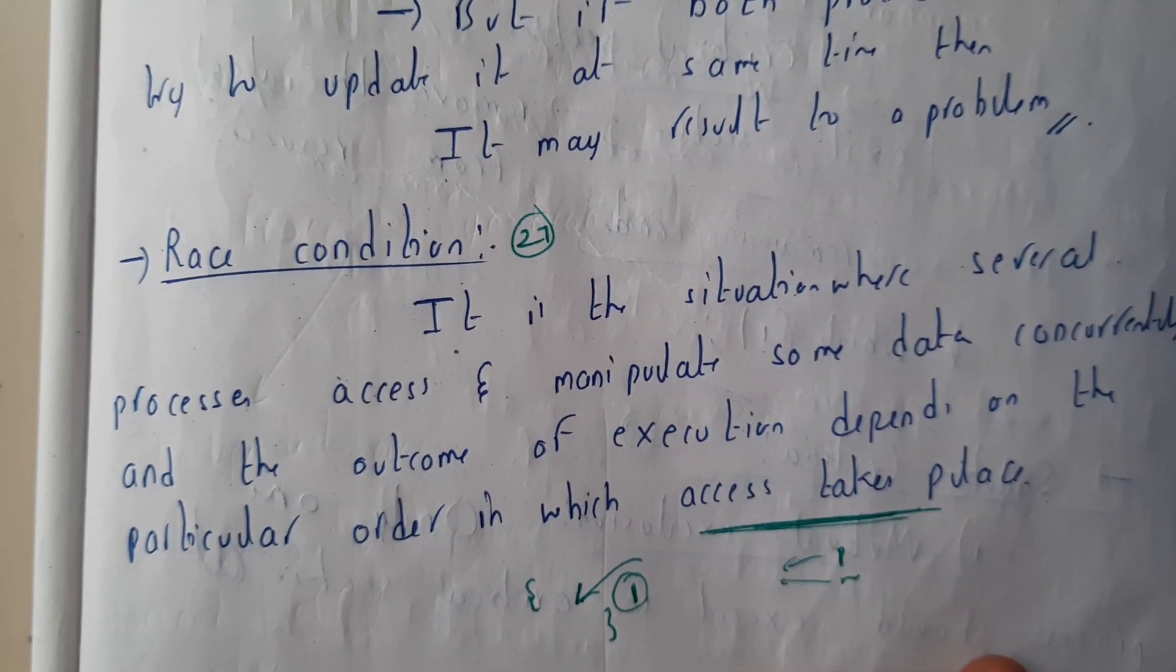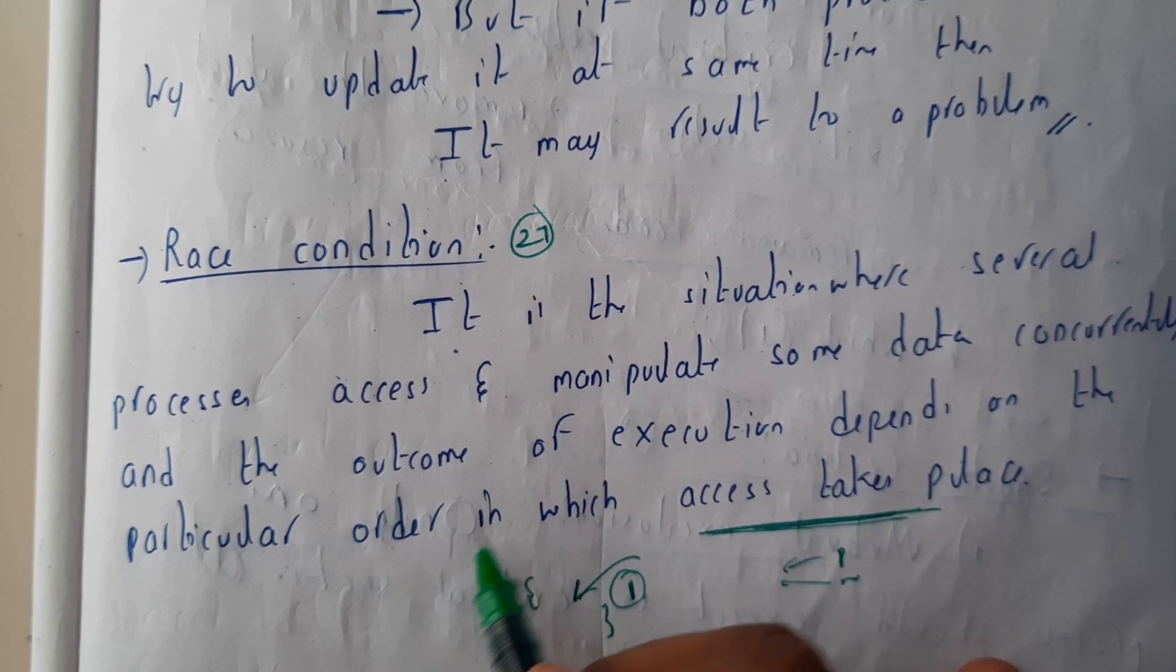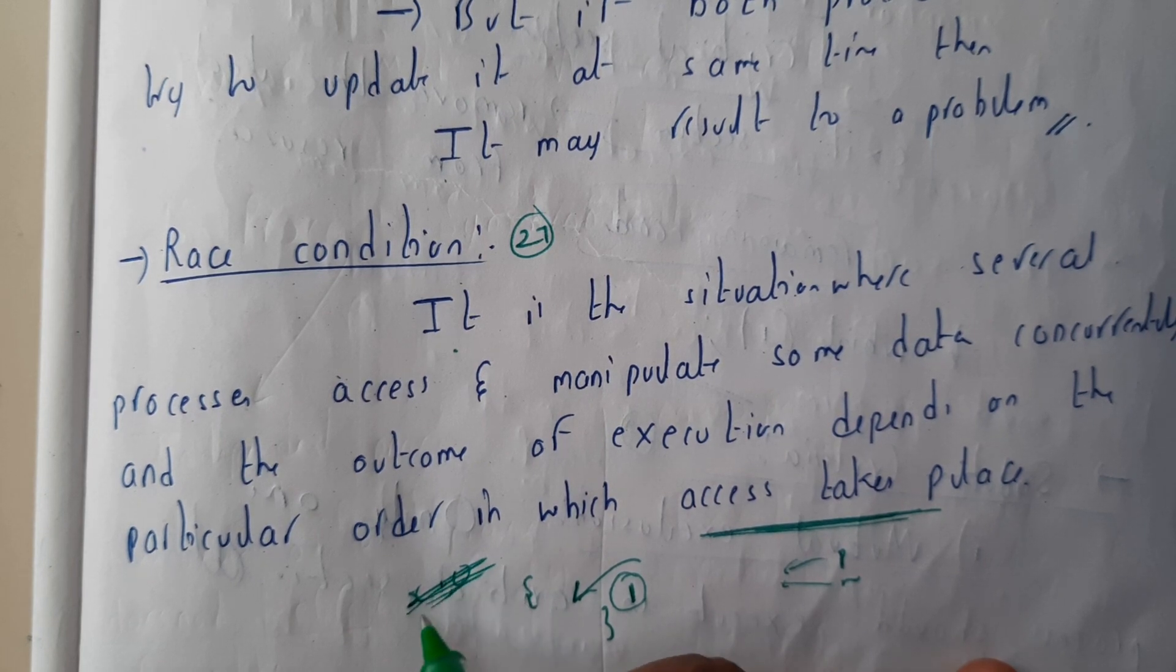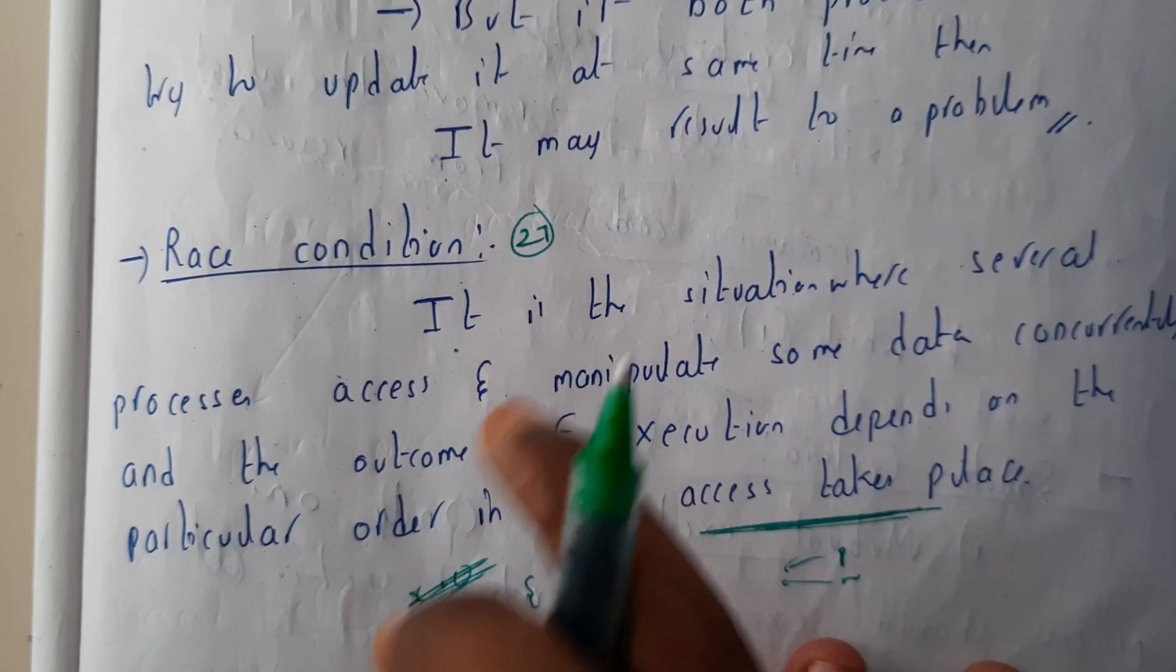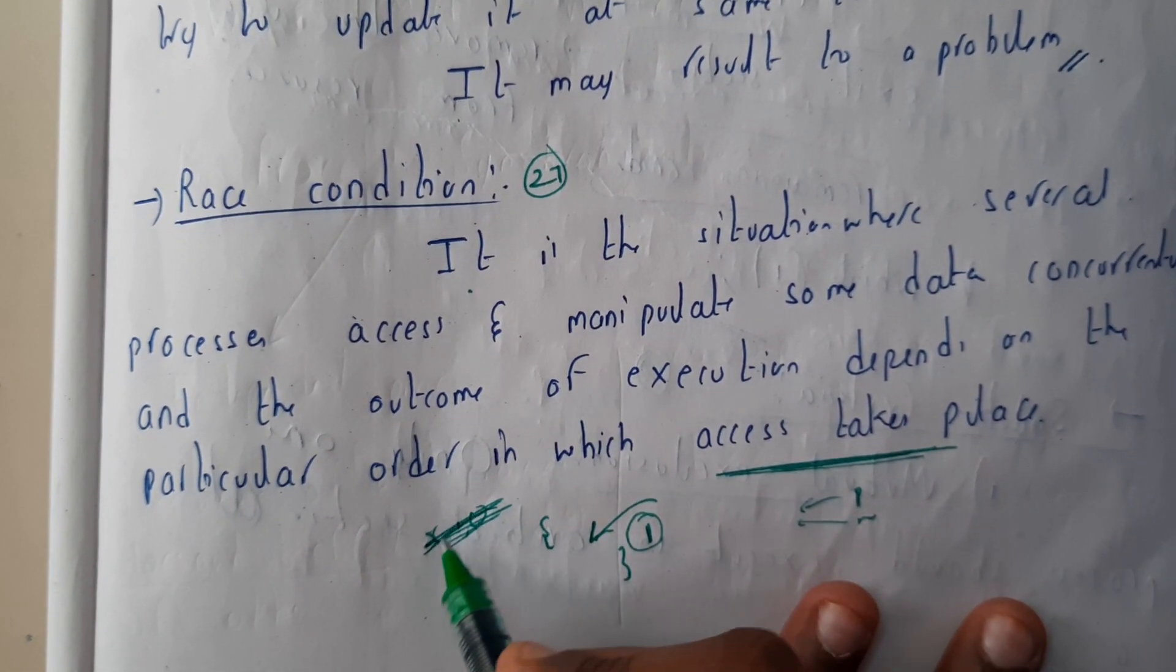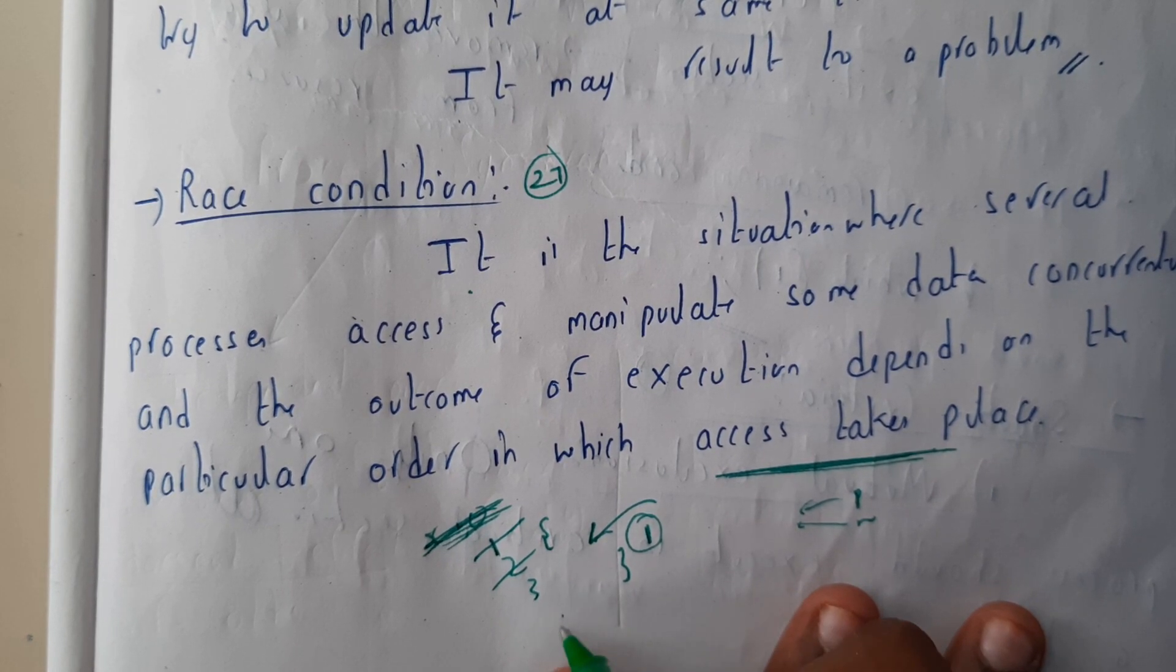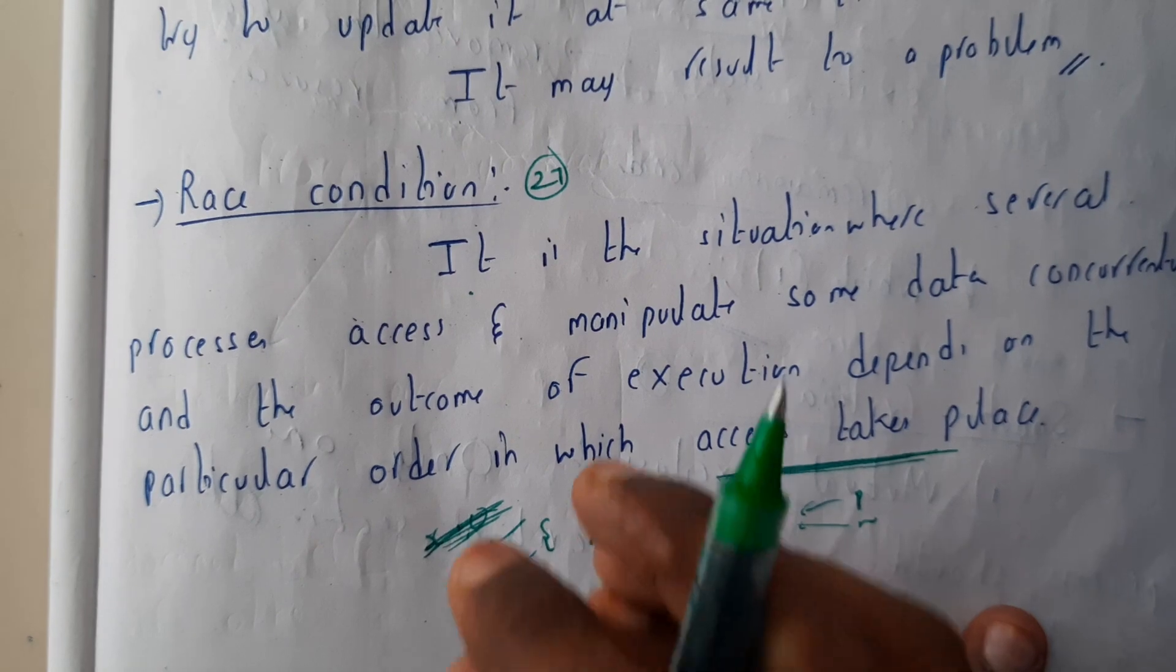The race condition is a situation where several processes are trying to manipulate a single data. The outcome of execution depends on the particular order of how it is executed. According to the execution, if first guy updated to one and second guy updated to three, if the increments take place, the last guy's increment will be the final answer. It depends on that condition. That is the race condition.